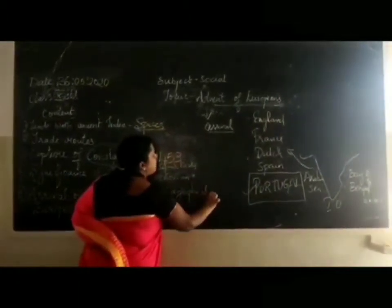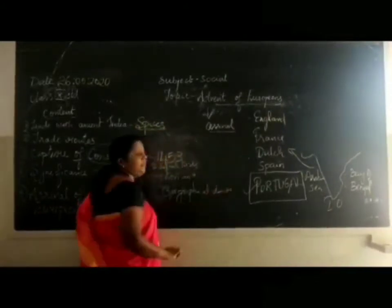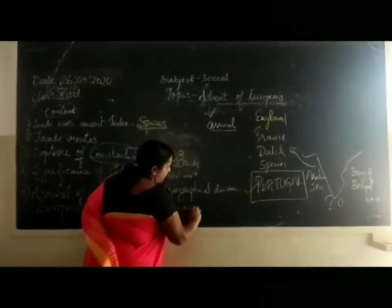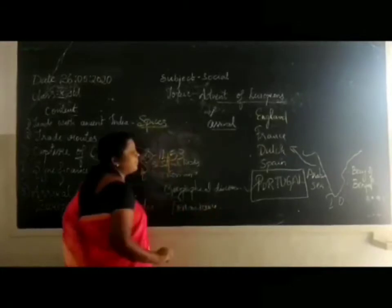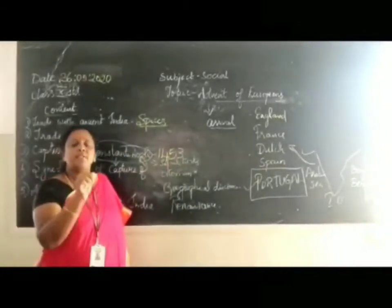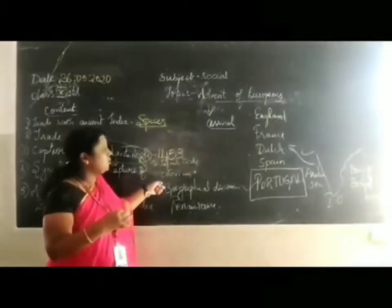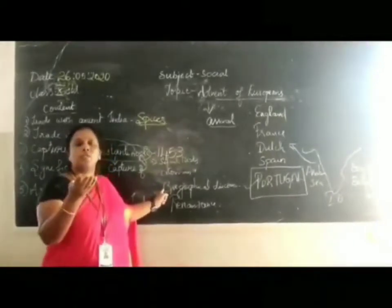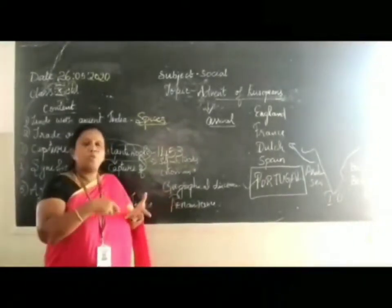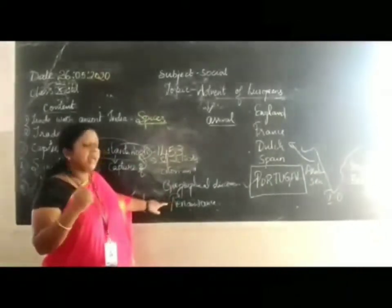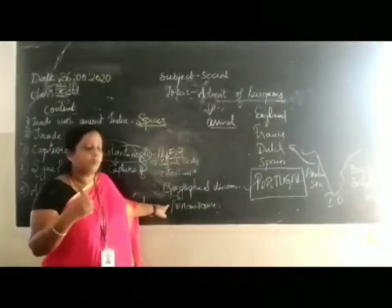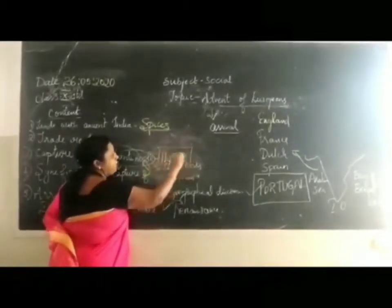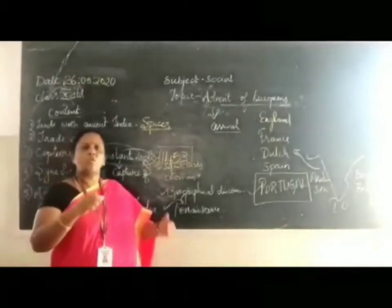When they started on geographical discoveries, many things helped them. One thing that helped them was the Renaissance — a revival in the field of literature and other knowledge. They also had two instruments called the compass and the astrolabe, which helped them navigate. These three things — the closure of Constantinople, the Renaissance, and new navigational instruments — led many Europeans to start geographical discoveries to find new trading centers.